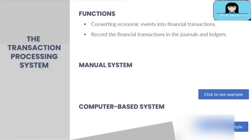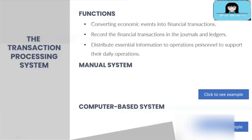Once the data are collected, TPS records the financial transactions in the accounting records such as journals and ledgers. Finally, the data are processed further by distributing it as essential information to operations personnel to support their daily operations.